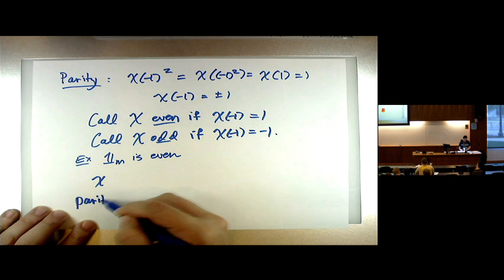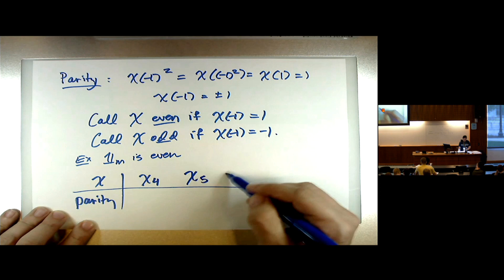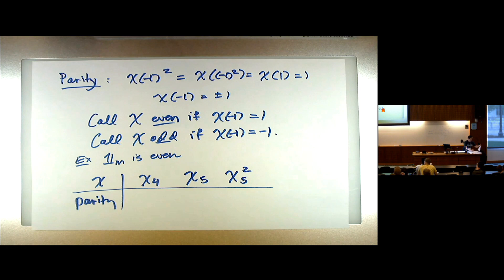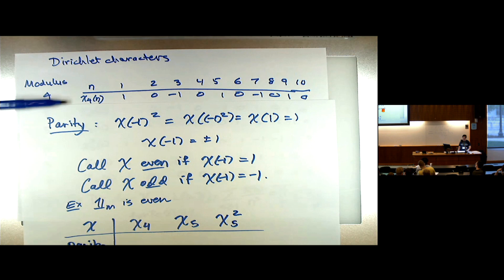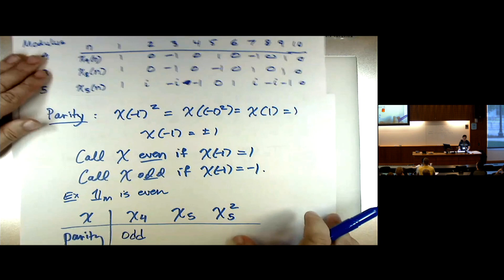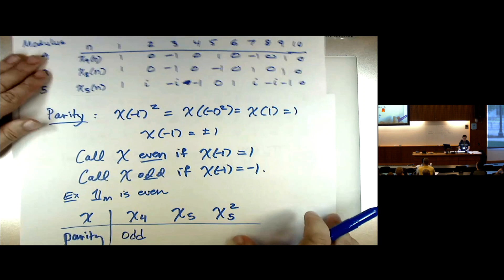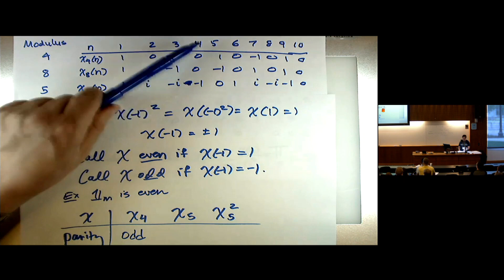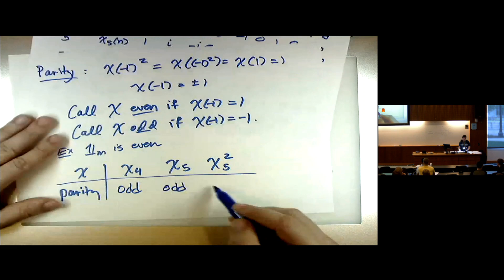Let's look at some characters and their parity. The character mod 4: I want to know χ_4(−1). Since −1 ≡ 3 (mod 4) and χ_4(3) = −1, this is odd. The character mod 5: χ_5(−1) = χ_5(4) = −1, so this is also odd. If you square an odd character it becomes even since (−1)² = 1. So characters fall into two types: even and odd. Even characters are most like the zeta function, since the trivial character mod 1 is even.